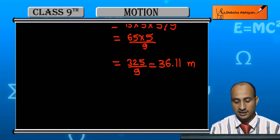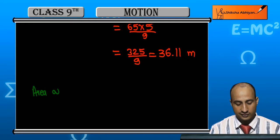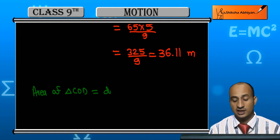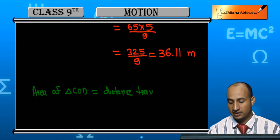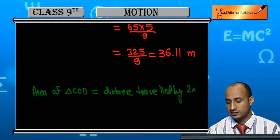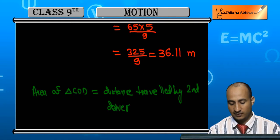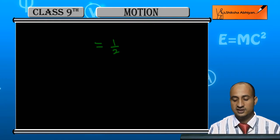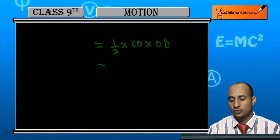For the second case, we find the area of triangle COD. The area of triangle COD will give us the distance traveled by the second driver. So the distance traveled by the second driver is equal to half times CO times OD.